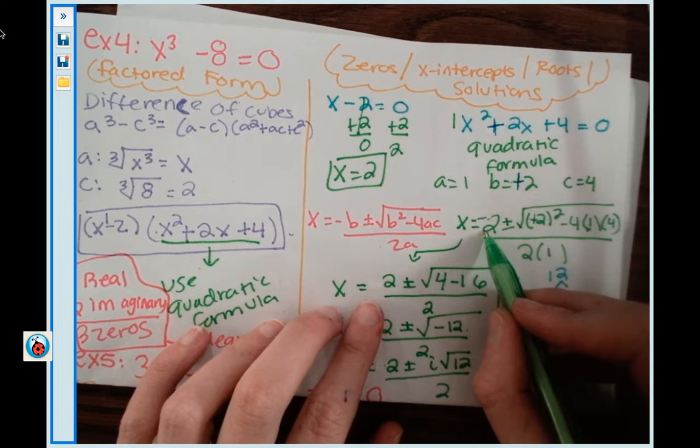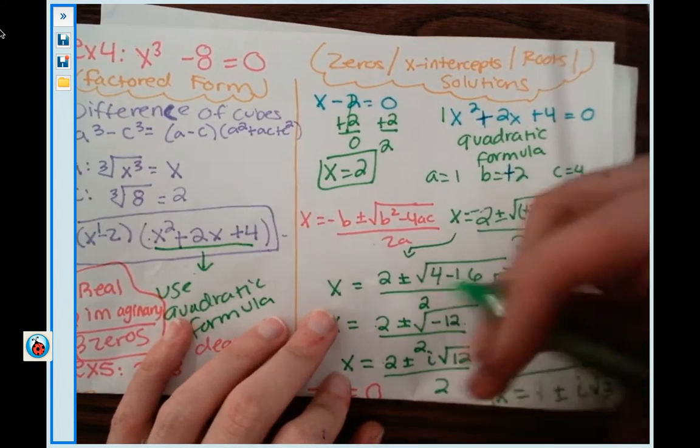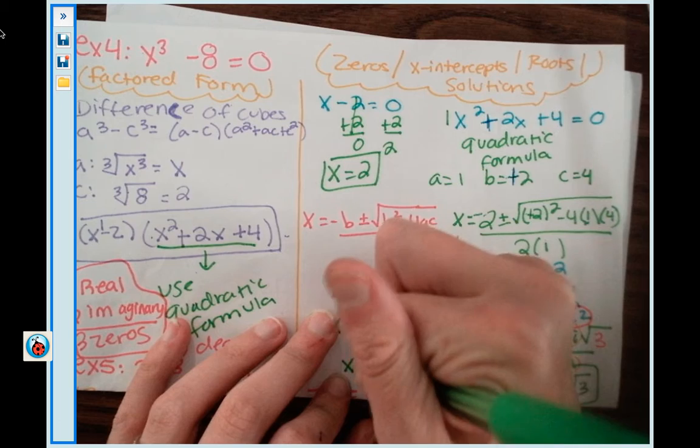And again, since that's the opposite of 2, all of these need to be the opposite of 2. So opposite of 2, opposite of 2, opposite of 2.